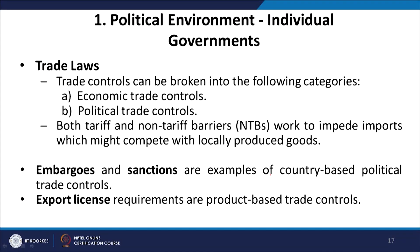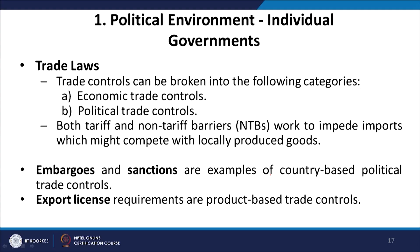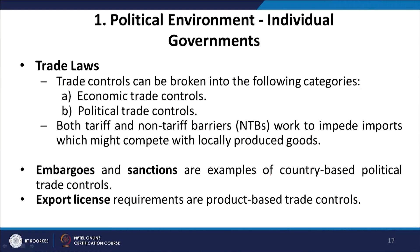Trade control can be broken into two different categories: economic trade controls and political trade controls. The government can control trade by economic controls or by political controls. For these, the government has tariffs and non-tariff barriers that work to impede imports which might compete with locally produced goods. The government can use various tariffs and non-tariff barriers to change the direction and amount of trade and imports, making locally produced goods competitive or uncompetitive.